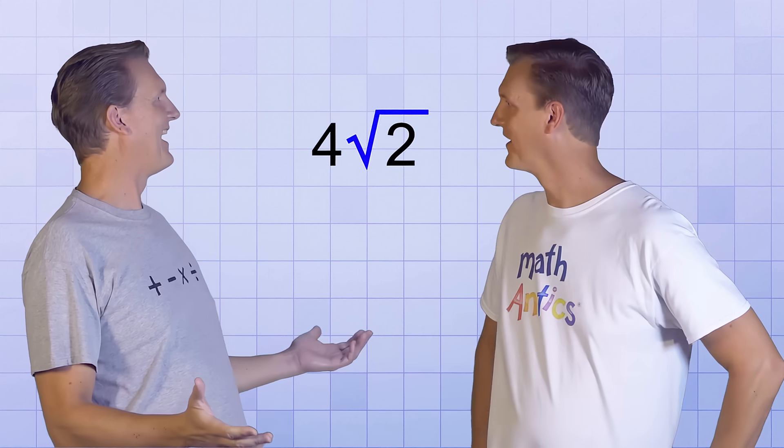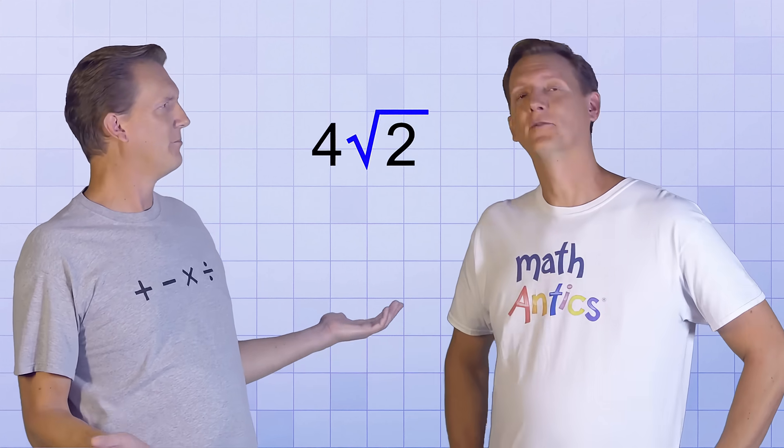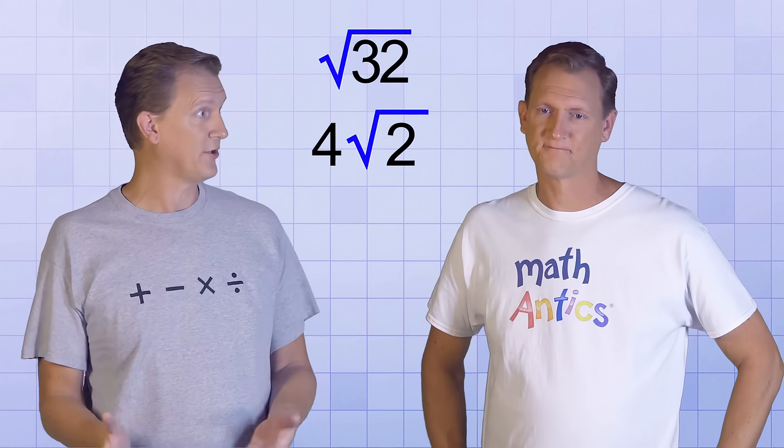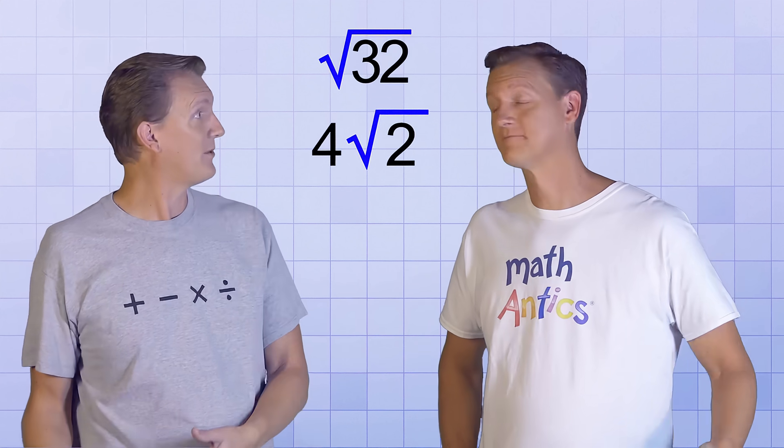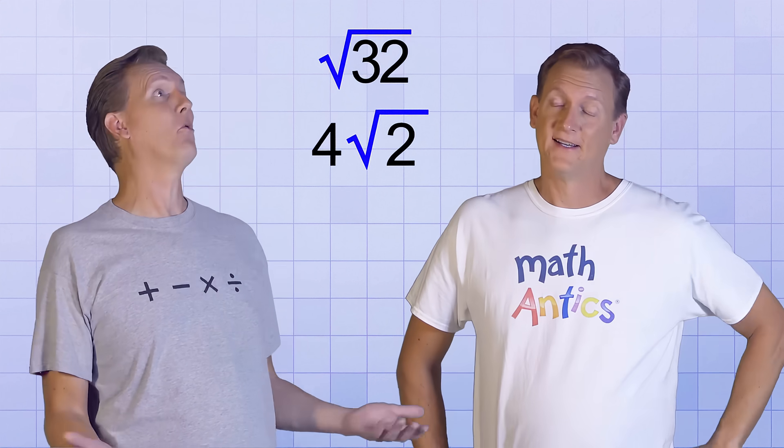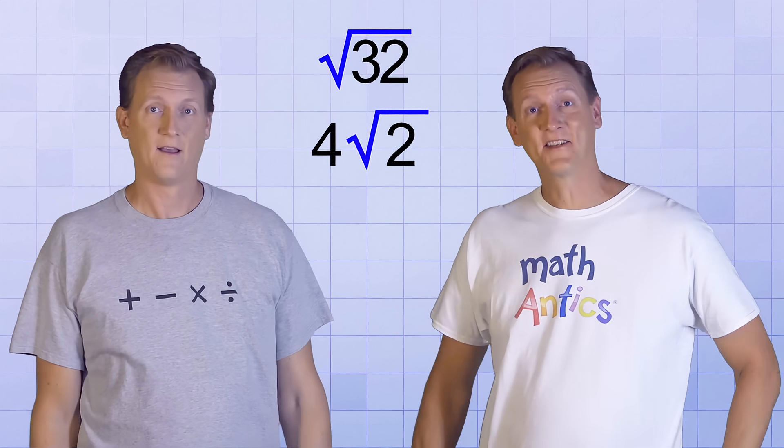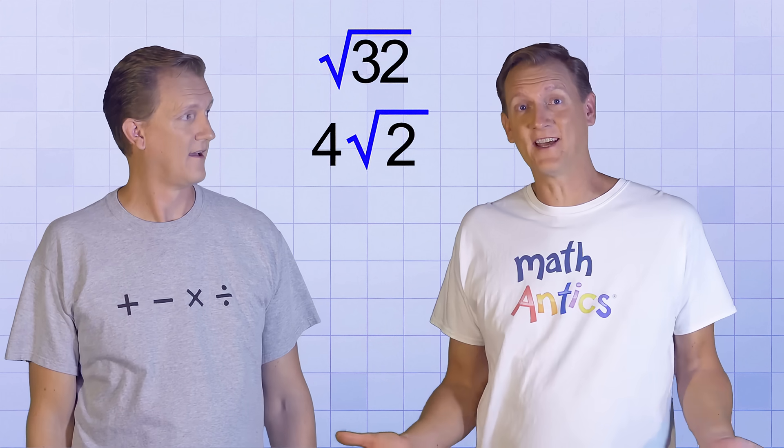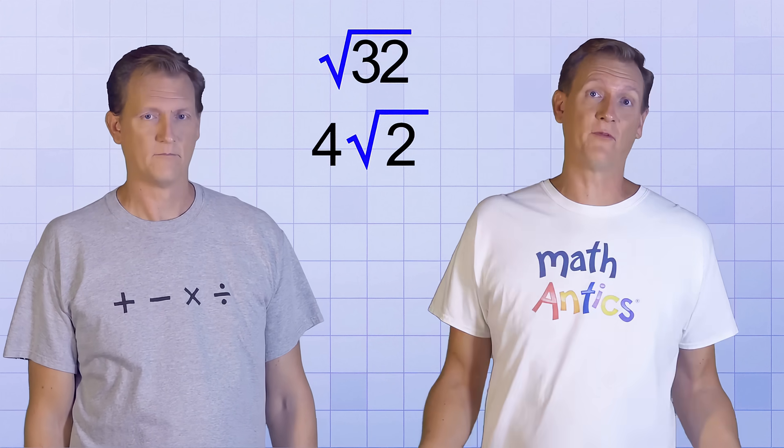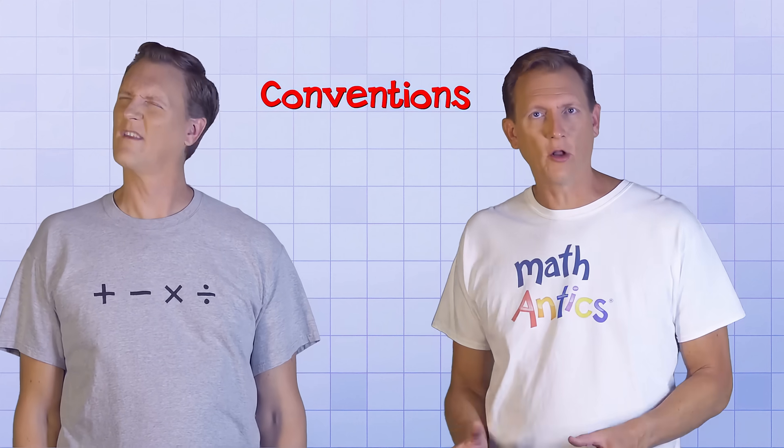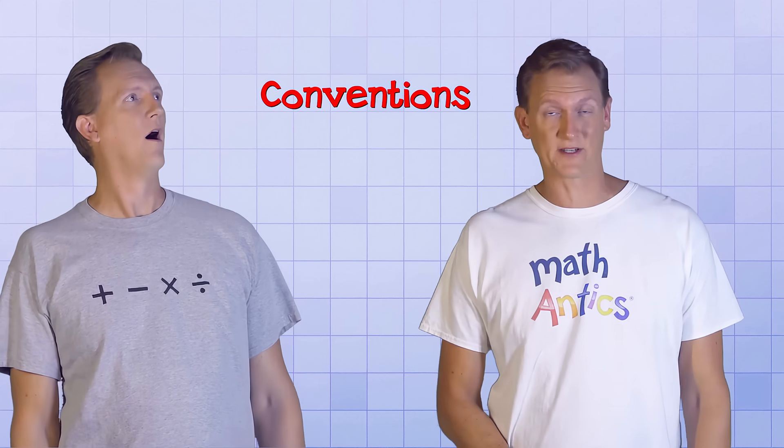Hold on a second… how is that answer simpler than what you had before? Before you just had the square root of 32. And now you have a whole number times a root. That seems even more complicated to me. Yeah, I know what you mean. Sometimes it's hard for people to decide what the simplest or most helpful form is. So mathematicians rely on what are called conventions, where they all agree on a preferred way to express things.